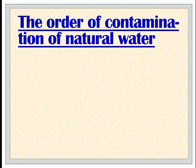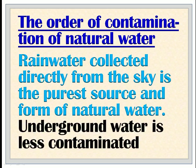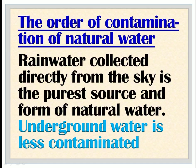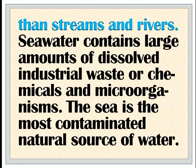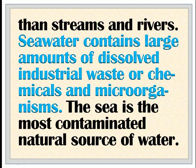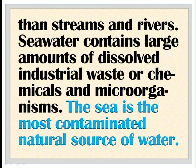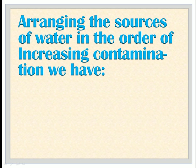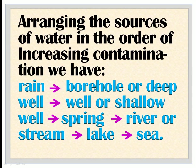The order of contamination of natural water: Rainwater collected directly from the sky is the purest source and form of natural water. Underground water is less contaminated than streams and rivers. Sea water contains large amounts of dissolved industrial waste or chemicals and microorganisms. The sea is the most contaminated natural source of water. Arranging the sources of water in the order of increasing contamination: rain, borehole or deep well, well or shallow well, spring, river or stream, lake, sea.